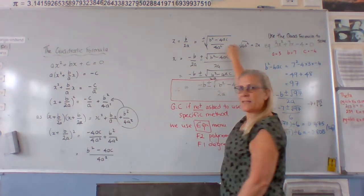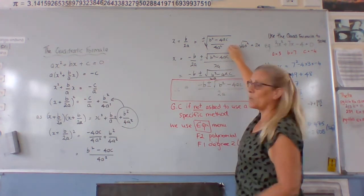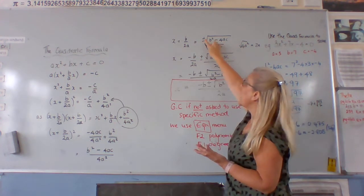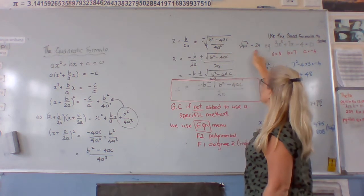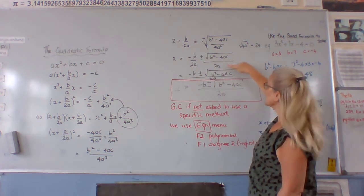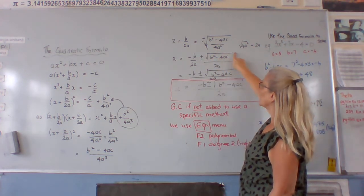Then we have to take the square root. So we take the square root, and when we take the square root, we've got to have a plus and a minus. So it's the square root of all of this, but the square root of the denominator is 2a, so we can just write that as 2a and leave the square root on the top.